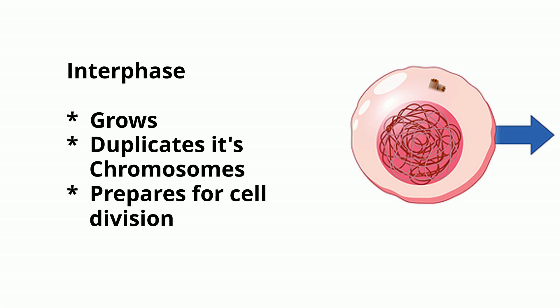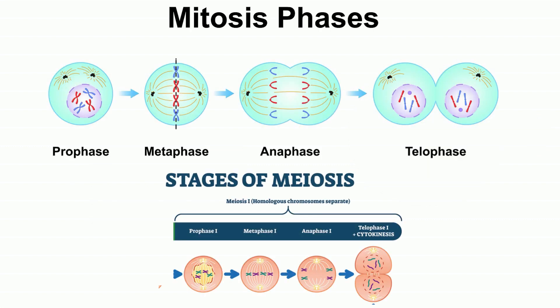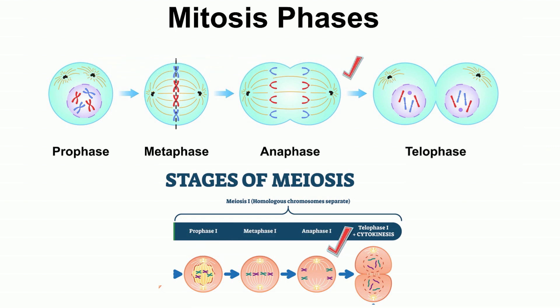During both mitosis and meiosis, the cells go through PMAT, which stands for prophase, metaphase, anaphase, and telophase.